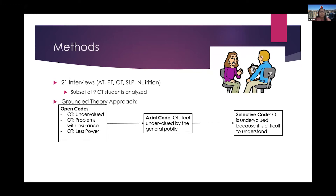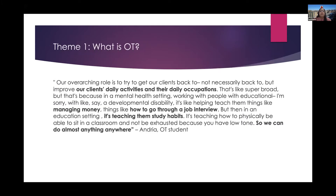From the sentences, I created open codes, which were basically a summary or small representation of what the sentence was about. Grouping those open codes together, I made axial codes, which were a summary of the related codes. Then the axial codes were grouped together to create a selective code, or theme. There were seven selective codes or themes that I found.